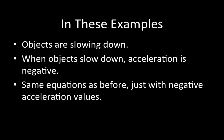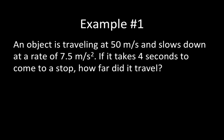So in these examples that we're going to work on together, just remember: when objects slow down, it means that the acceleration is negative. We're going to use the exact same equations as before — just this time, we're going to give those acceleration values a negative. So let's go through this. Here's the first example.